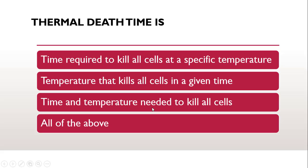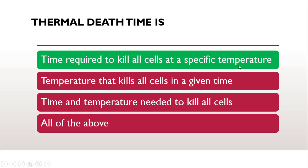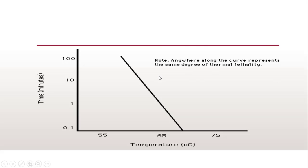The next question is: thermal death time is — whether it is the time required to kill all the cells at a specific temperature, whether it is the temperature that kills all the cells in a given time, whether it is the time and temperature needed to kill all the cells, or all of the above. The correct answer is: it is the time required to kill all the cells at a specific temperature. From the graph, you can see it is time versus temperature — how long it takes to kill specific bacteria at a specific temperature. So it is time and temperature dependent.